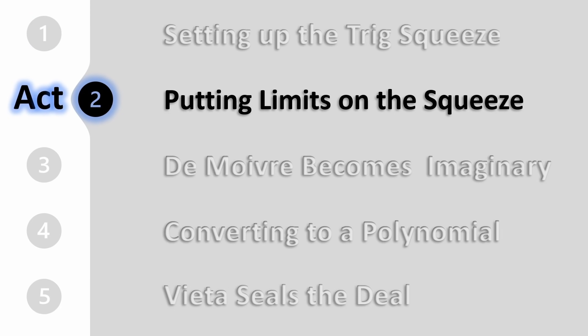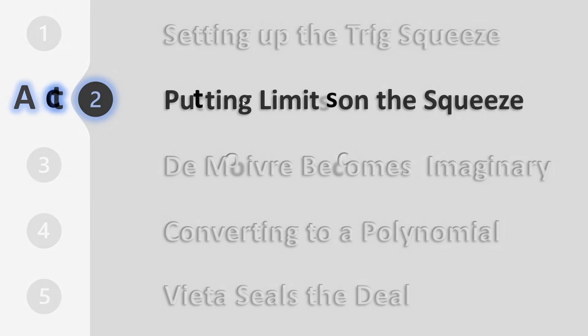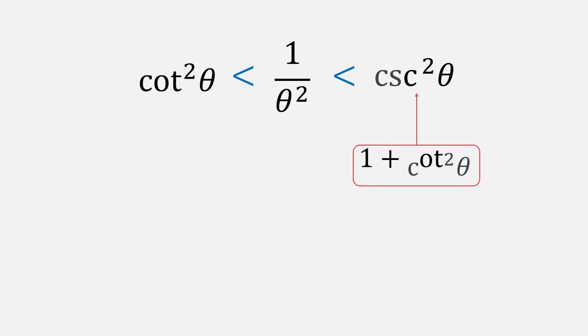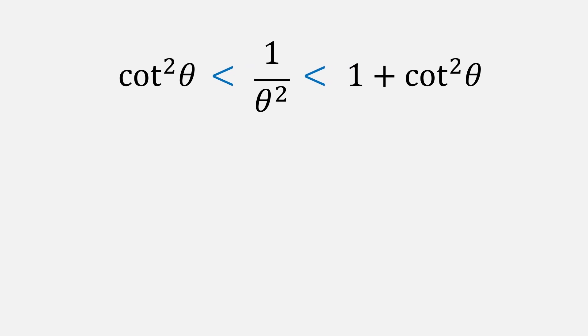This expression is going to be our launch pad for act 2. For act 2, we're going to take our trig inequality from act 1 and put some limits on it. Let's rewrite our trig inequality using a familiar trig identity. Next, let's replace theta with n pi over 2n plus 1, where little n is an integer between 1 and some fixed integer, big N.